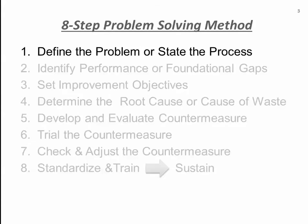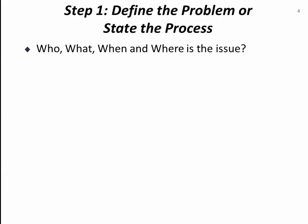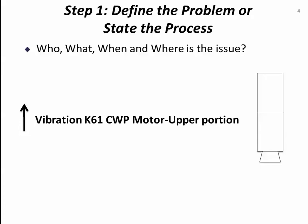The first step is to define the problem or describe the process to be improved. Here, we ask the who, what, when, and where questions. For example, let's say we receive word that a CERC water pump is vibrating a lot. As we ask the who, what, when, and where questions, it's clarified that the vibration is on the upper portion of the CAHE-61 CERC water pump motor. Note that that statement includes our scope and boundaries.